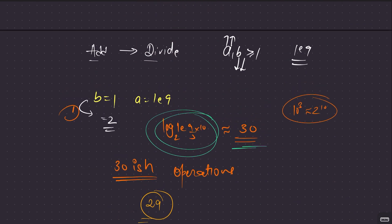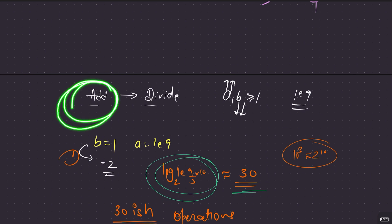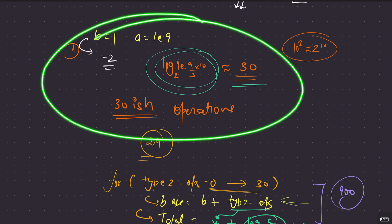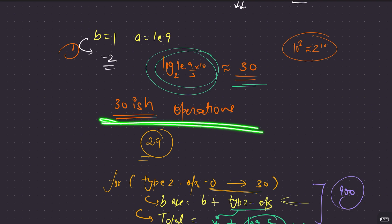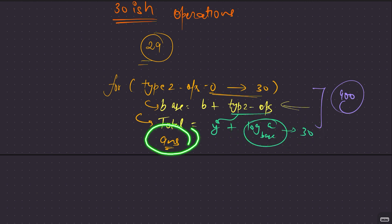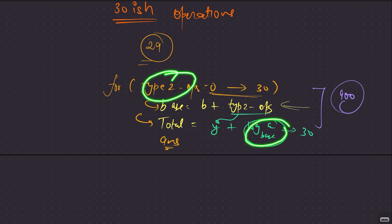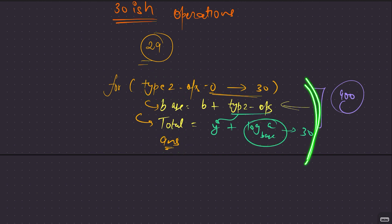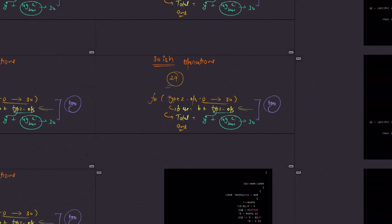To summarize the approach: first we established that addition comes before division. Then from the worst-case analysis, we found type 2 operations are bounded at around 29. So we try 0 to 30 type 2 operations, find the resulting b value, compute how many divide operations destroy a, sum them up, and update the minimum answer.